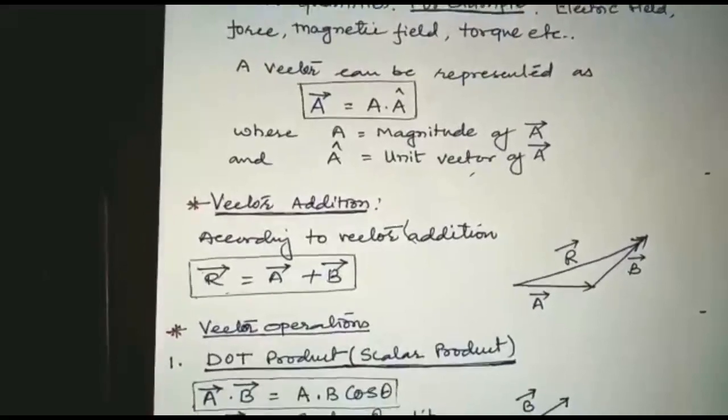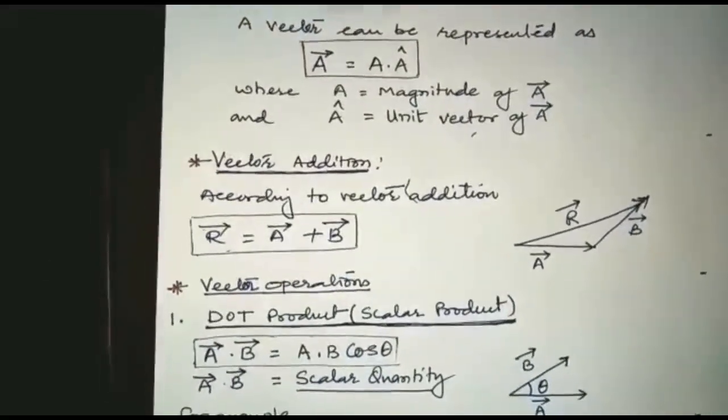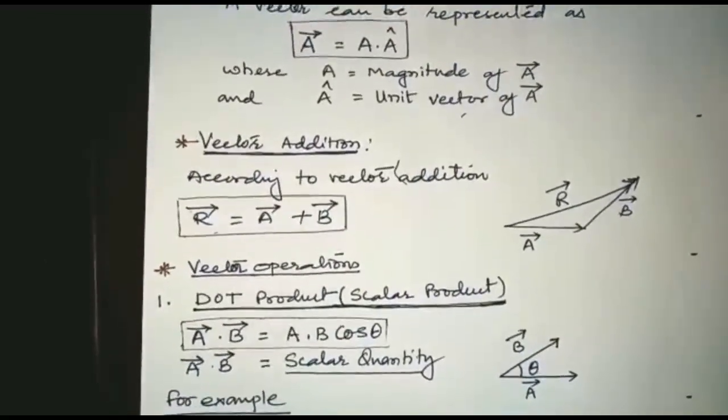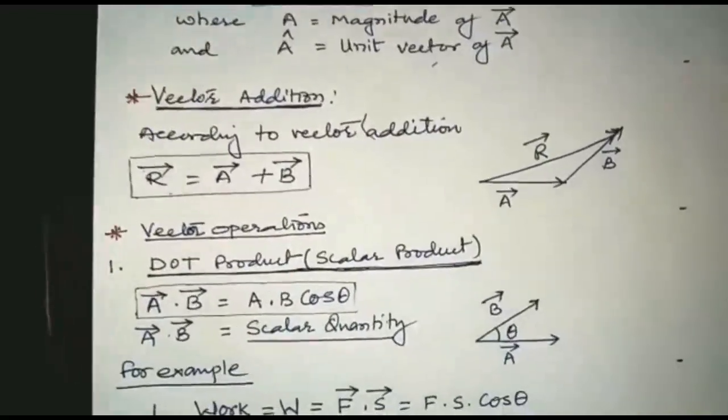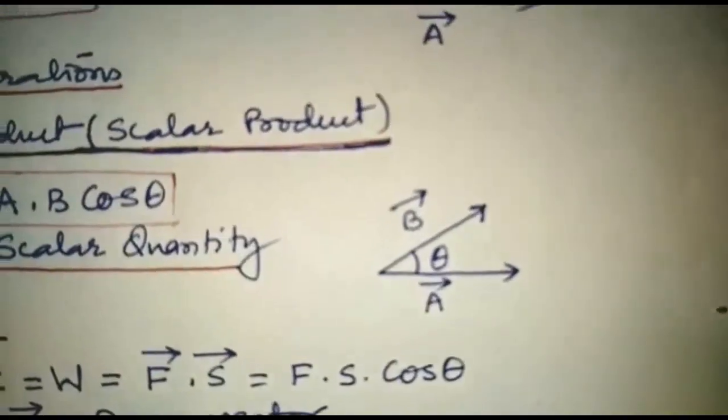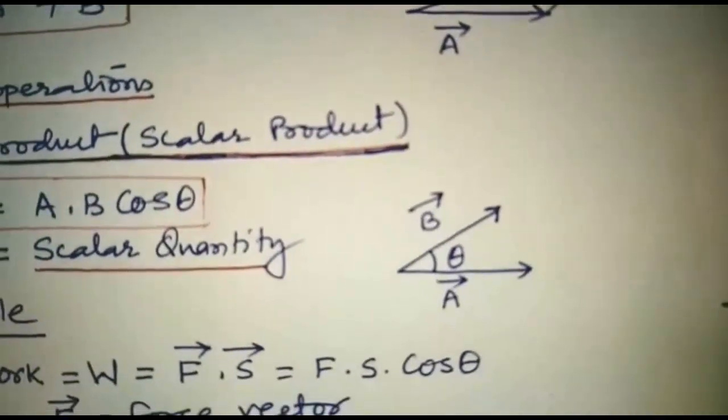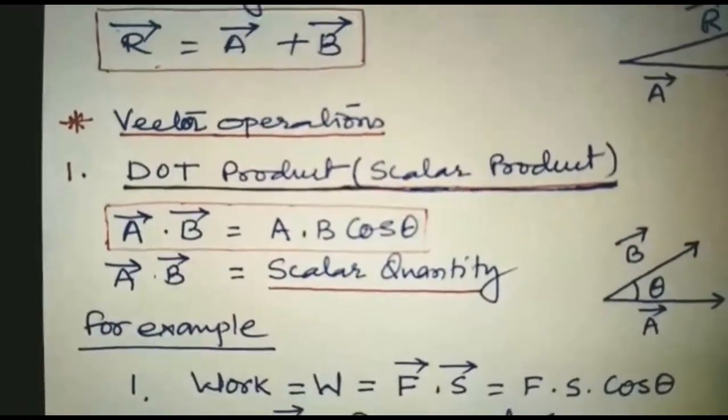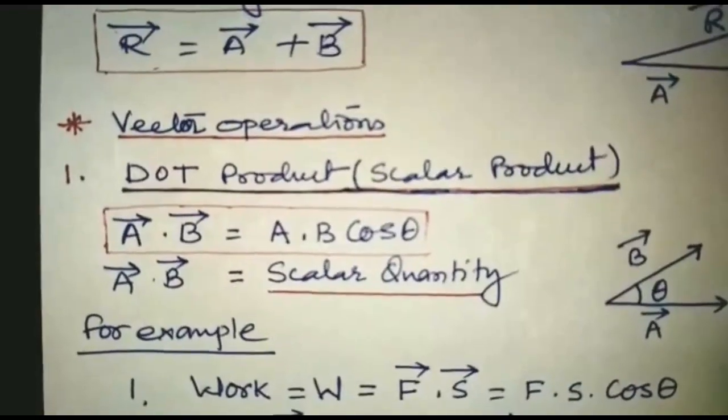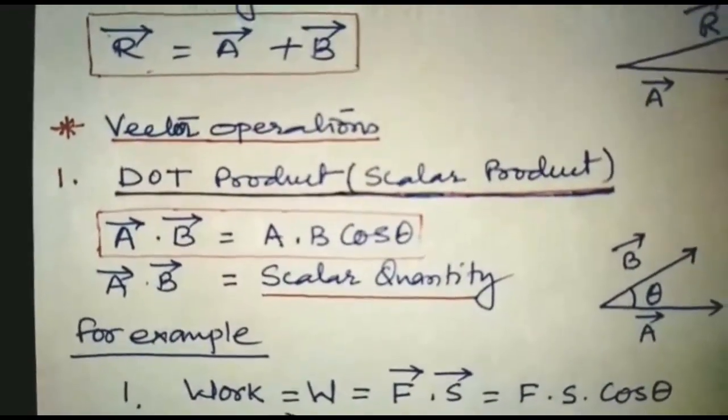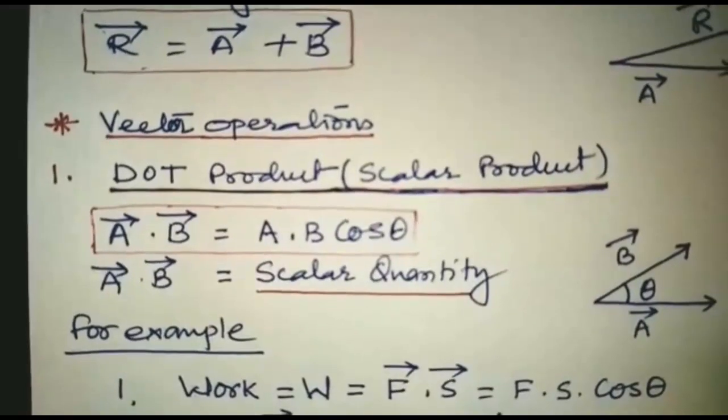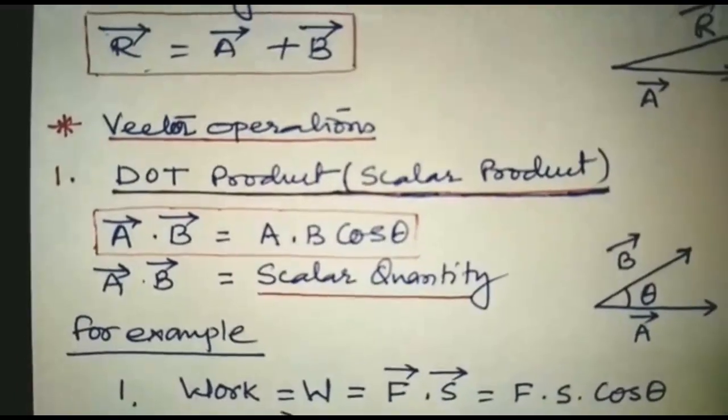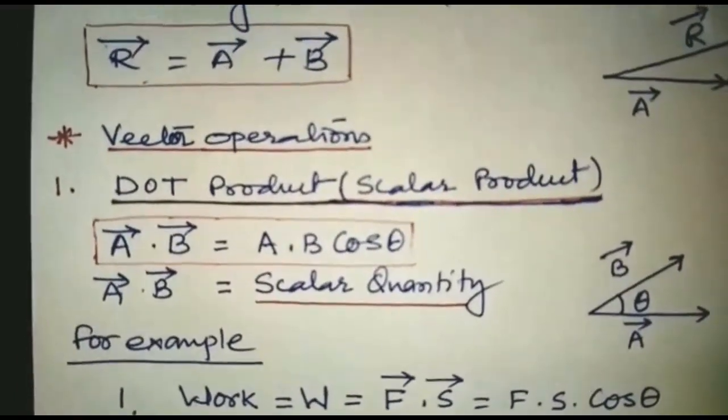Now we are going to see two important vector operations. First is dot product, which is also known as scalar product. Let us consider two vectors, vector A and vector B. The angle between two vectors is theta. So according to dot product, vector A dot vector B equals A dot B cos theta, where A and B are the magnitudes of vector A and vector B, and theta is the angle between two vectors. Here A dot B gives a scalar quantity.